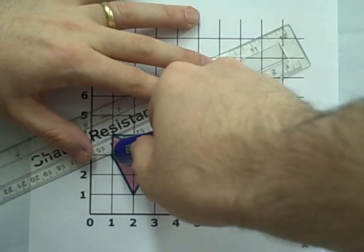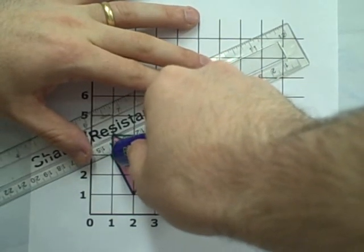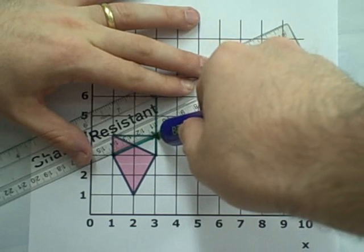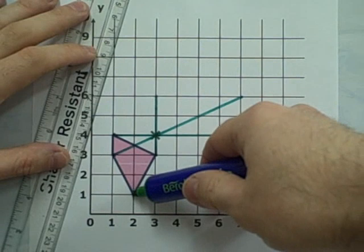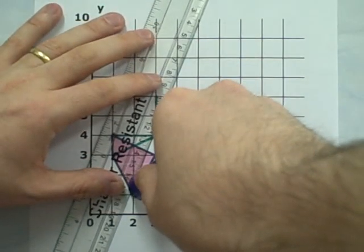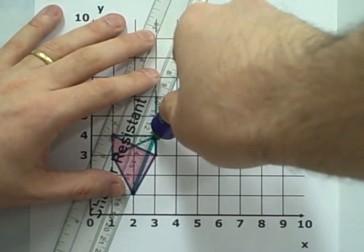2 to the left and 1 down becomes 4 to the right and 2 up. And finally, 1 left and 3 down becomes 2 right and 6 up.